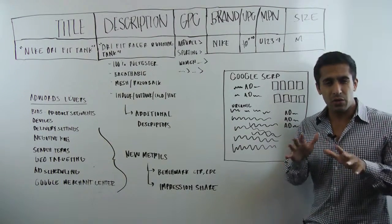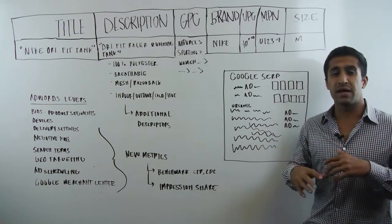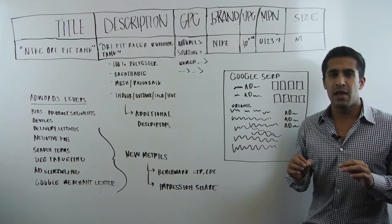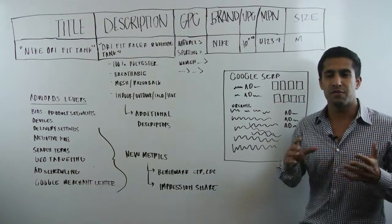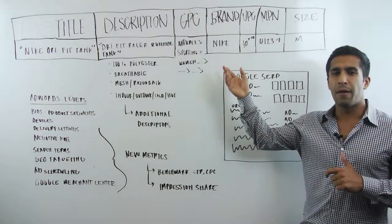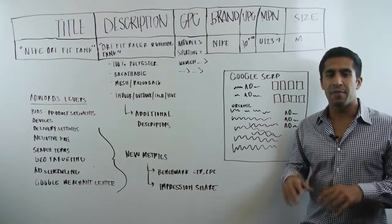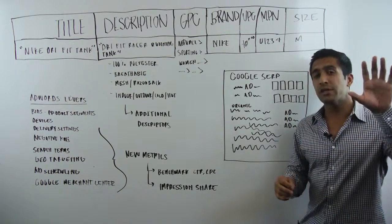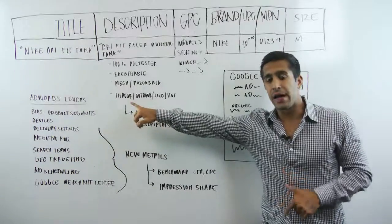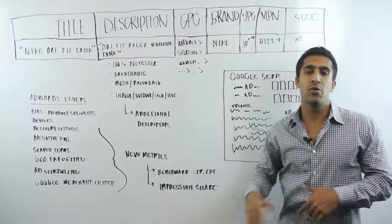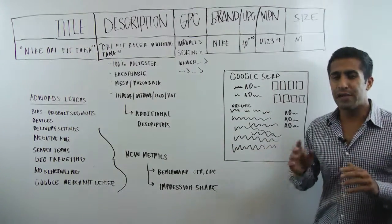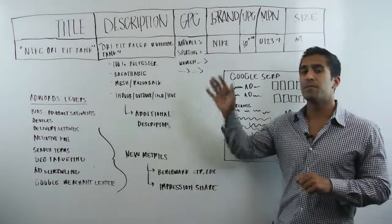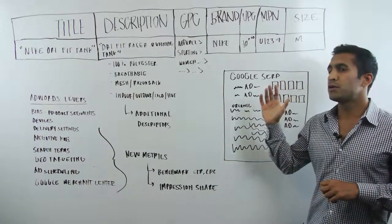The cool thing is the same way that Google crawls the web to decide who shows up first for organic listings based on the search query, they're doing the exact same thing with your product data feed. When you enter a search query, say you're looking for a Nike dry fit tank top, kind of like I got here, they're crawling all the data feeds that have submitted that product or that title or description or even that brand, reviewing the search query, taking into account the different AdWords levers, and deciding who actually shows up. In a nutshell, your data feed almost acts like the SEO for your PLA campaigns. It's critical to ensure that you have the best title and description possible to show up for those certain queries.